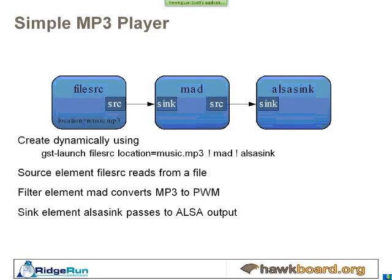Let me give you a concrete example — the simplest one I could come up with that does something useful. Let's say you wanted to make an MP3 player and you wanted to use GStreamer as your framework. You can run this exact pipeline on a Hawk board to try it out. The pipeline always has a source at the beginning on the left side, and the data gets routed through the pipeline and ends up on a sink on the right side.